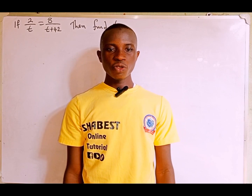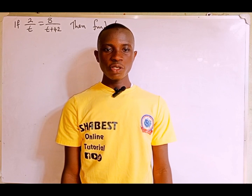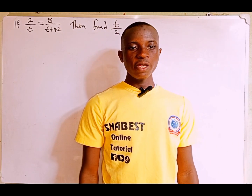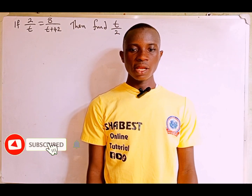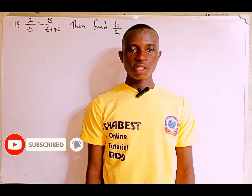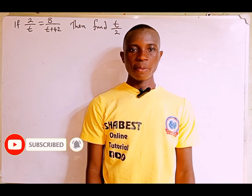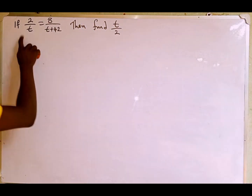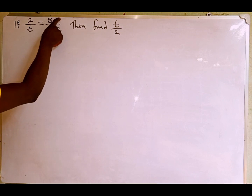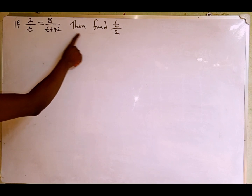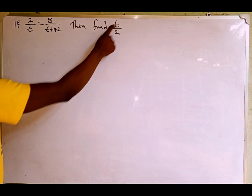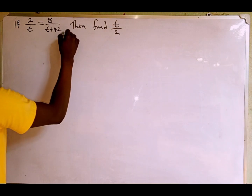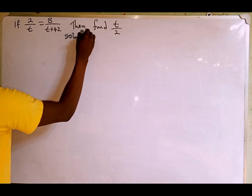Hi guys, welcome back to Shabez Online Tutorial. In today's tutorial, I'm going to provide a solution to the question on the board. If you are new here, consider subscribing to my YouTube channel and also follow me on Facebook, TikTok, and Instagram at Shabez Online Tutorial. The question reads: if 2 over t is equal to 8 over t plus 42, then find the value of t over 2.